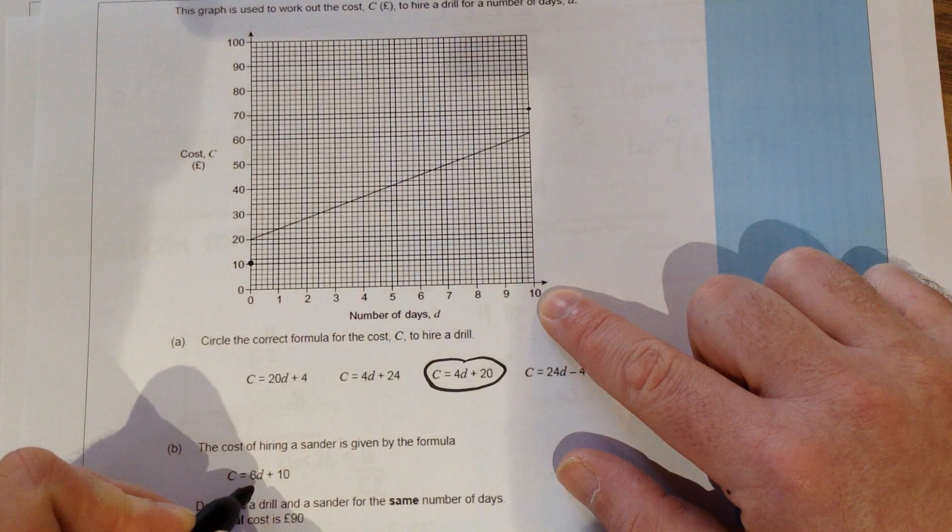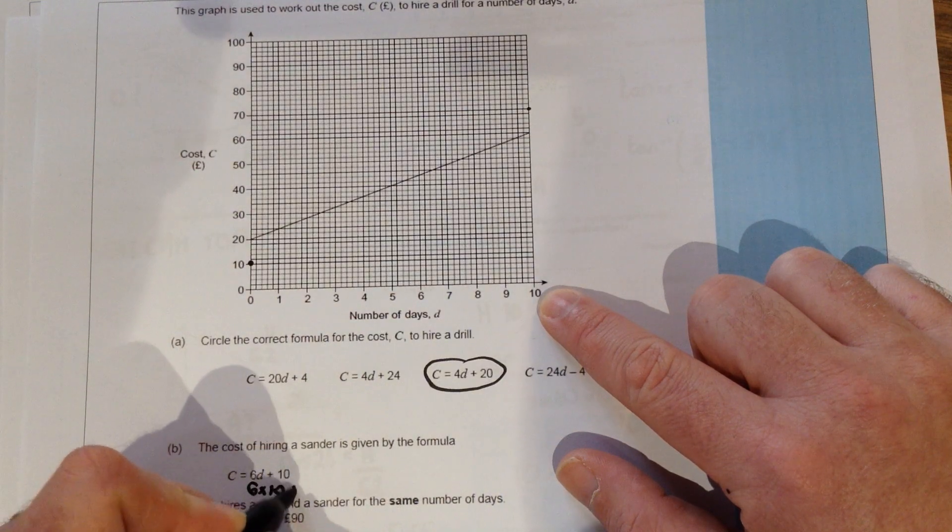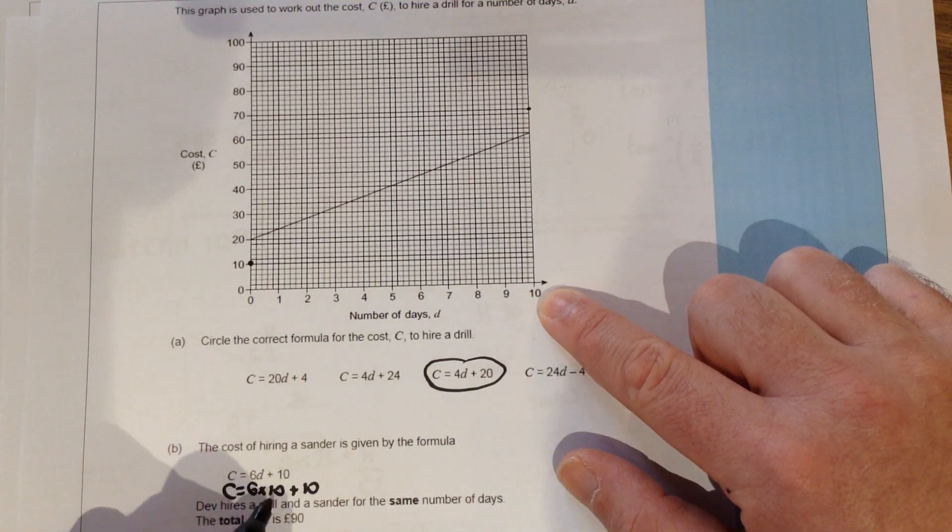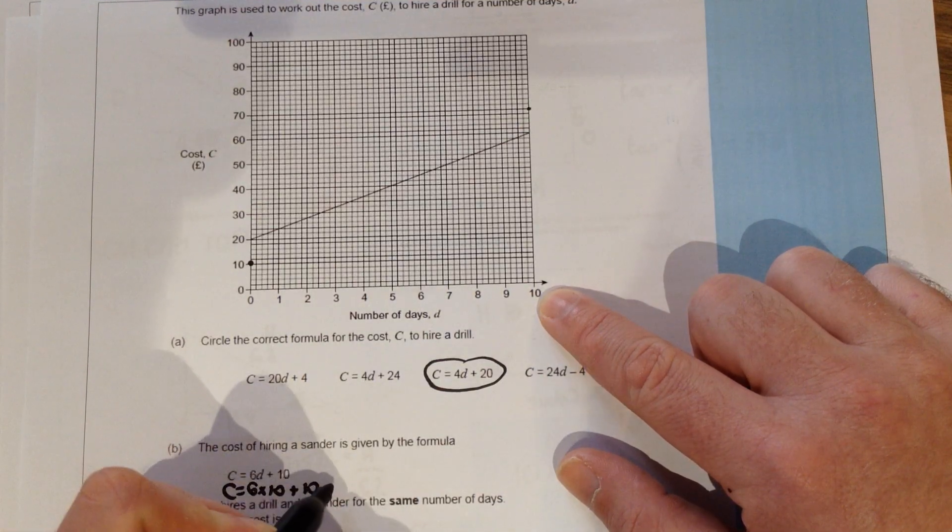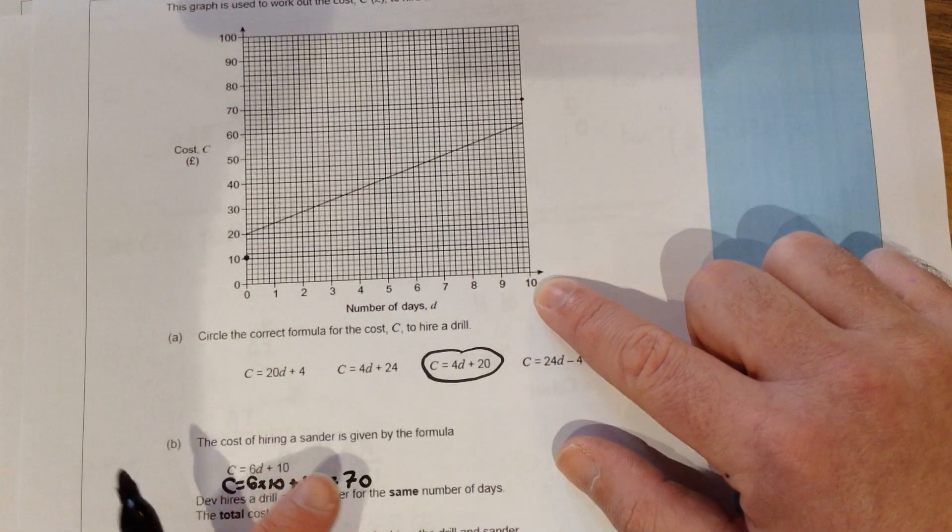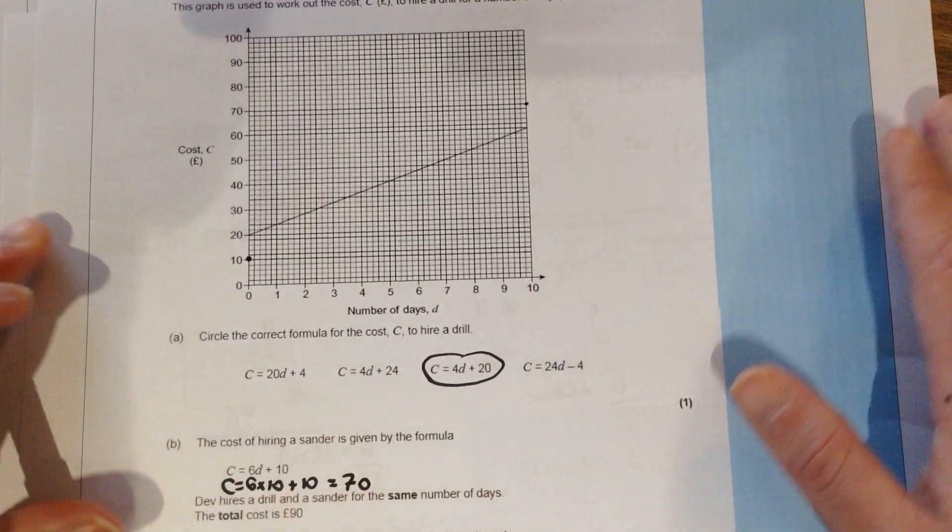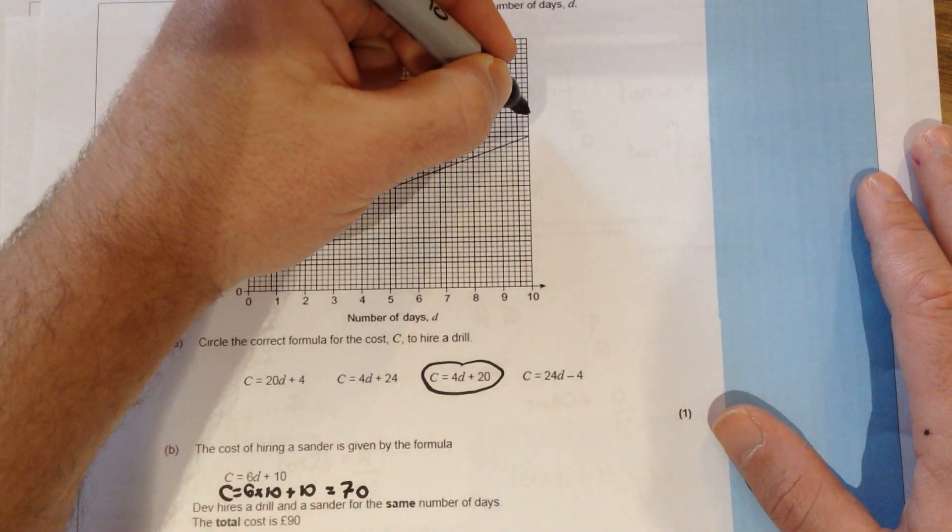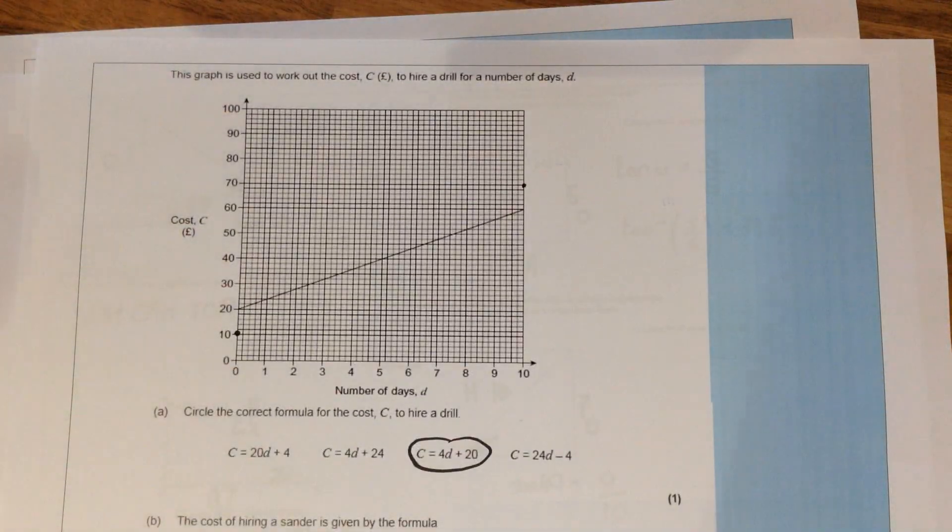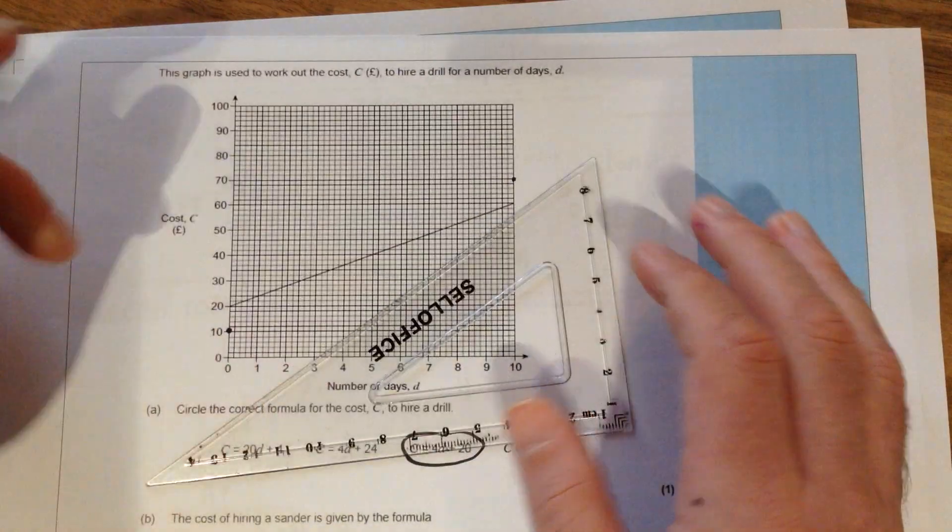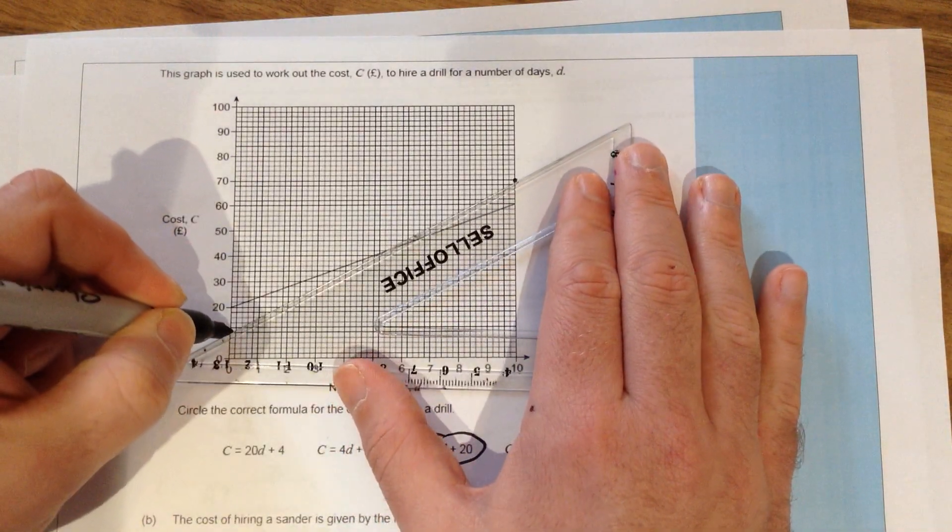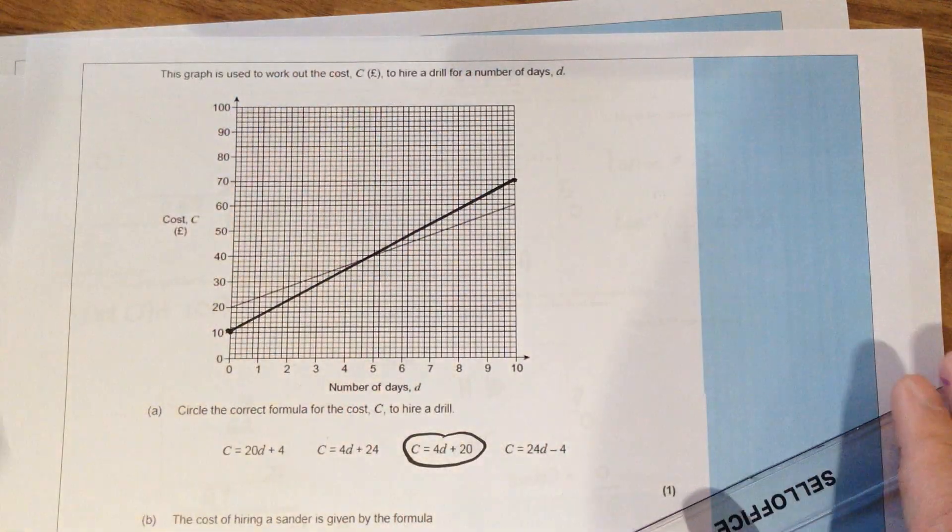So if D was 10, the number of days that we rented the sander for it was 10, we would get 6 times 10 plus 10 would be our cost. 6 times 10 is 60 plus 10 is 70. So if I rented that sander for 10 days it would cost me 70 pounds. So if I put a little mark on the graph at that point and then to draw the conversion graph, all I would need to do is join those two points together to give you something that looks like that.